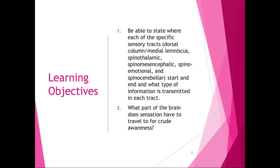The spinothalamic pathway goes from the spine to the thalamus — its name tells you that — and it transmits coarse touch, temperature information, and nociception. Those are A-delta fibers. The dorsal column medial lemniscus uses A-beta fibers. In this section we're going to talk about the spinal mesencephalic tract, spinal emotional tract, and spinal cerebellar tracts.